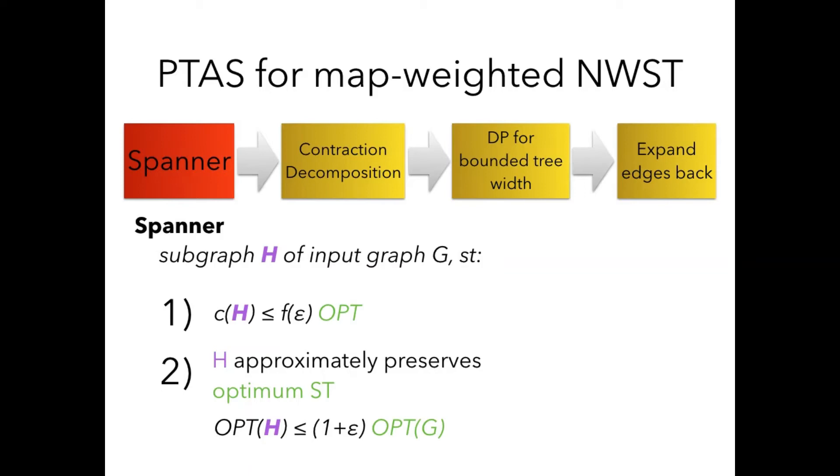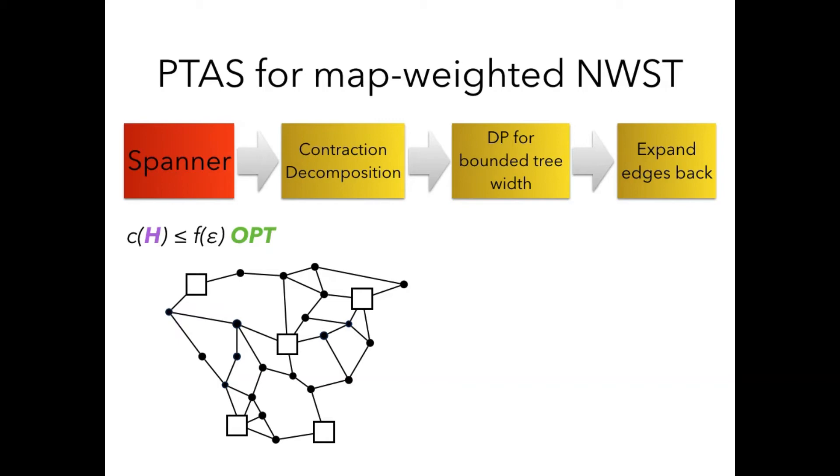Assume you have a spanner construction. The spanner, what is the spanner? Spanner is a subgraph of your input graph, such that it has two properties. First property is that it is cheap, it is not more expensive than a constant times optimum solution, and second it approximately preserves the optimum solution in your input graph. So assume you have a spanner, assume this is done, say this graph is a spanner, and it costs some constant times OPT. What we can do then in this framework is that there is a contraction decomposition lemma, which gives you a decomposition of edges into set of edges, with a property that if you take any set of those edges, let's say the blue edges, and you contract all these edges, so contraction is this procedure, this is how we contract one edge, but you contract all the edges.